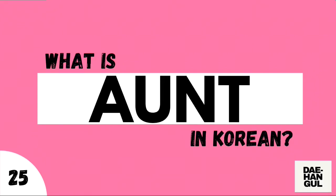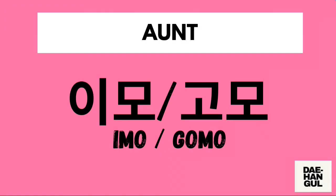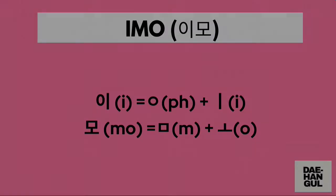What is aunt in Korean? There are two possible terms for aunt. If it is your maternal aunt, the term is emo. If it is your paternal aunt, it is gomo. Emo is pronounced as a two-syllable word: the first syllable is 'e' and the second syllable is 'mo.' Gomo is also a two-syllable word: the first syllable is 'go' and the second is 'mo.' Emo is your mother's sister and gomo is your father's sister.